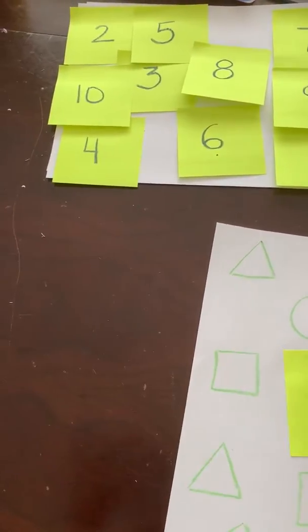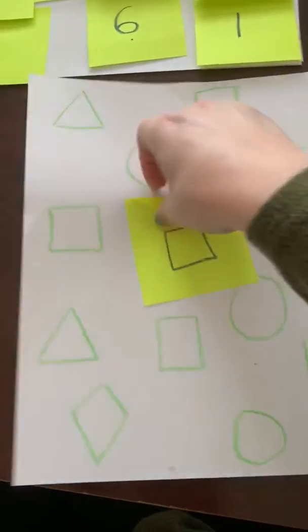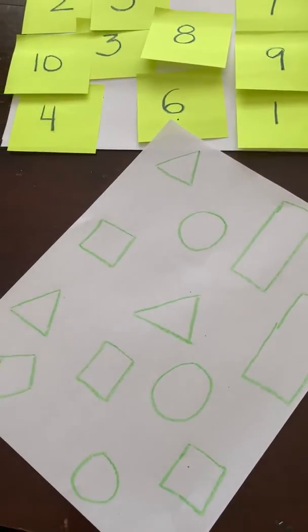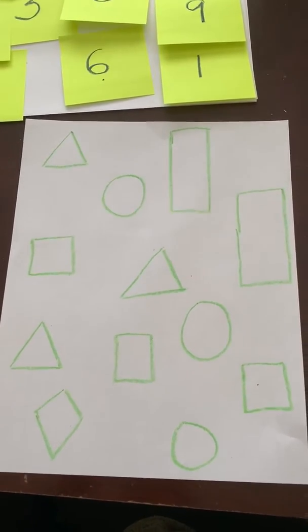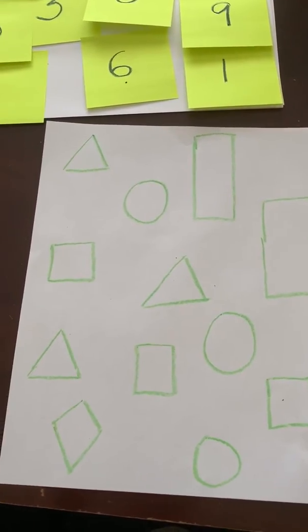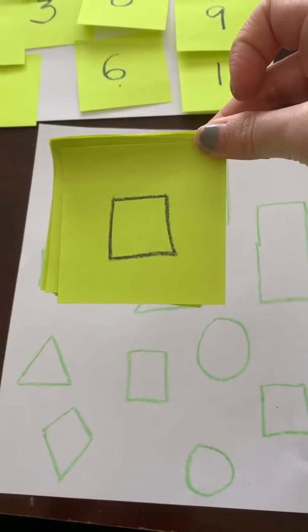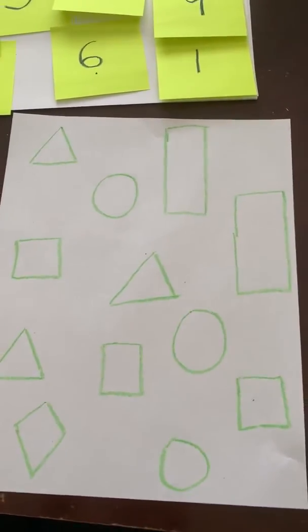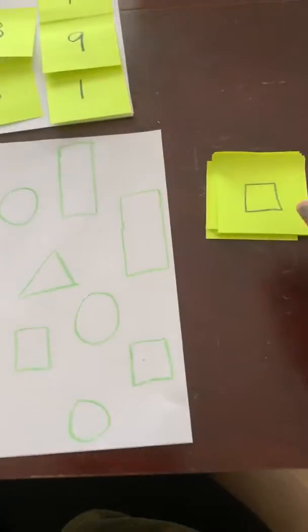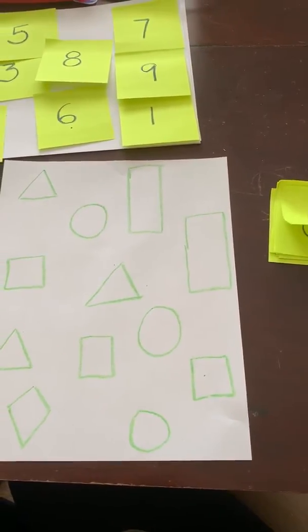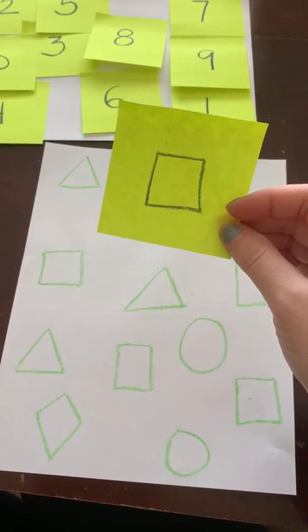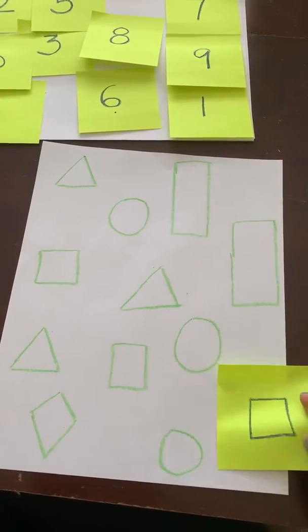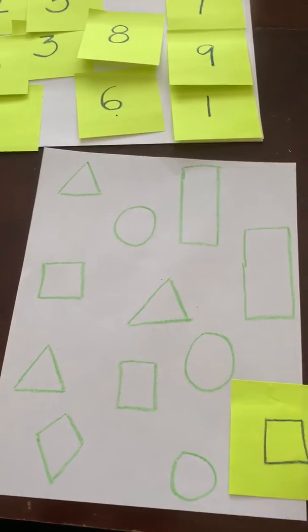So what you see here is I got a piece of paper and I drew a whole bunch of shapes on it. And then what you do is you draw the same amount of shapes on these post-its. And then in random order you're going to grab one post-it. And this is a square. So I'm going to want to find a square. Right there. Let's stick it on.